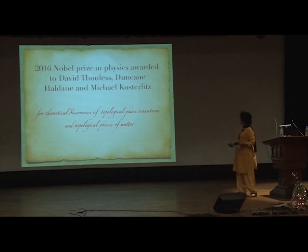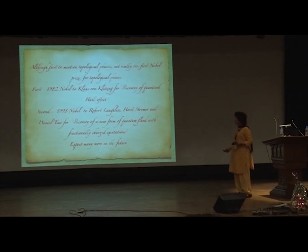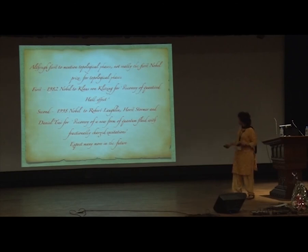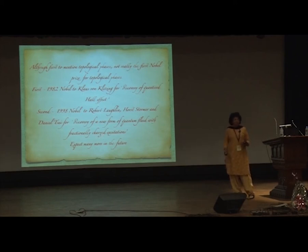The 2016 Nobel Prize in Physics was awarded to Thouless, Haldane, and Kosterlitz for theoretical discoveries of topological phase transitions and topological phases of matter. But I want to emphasize that although it's the first to explicitly mention topological phases, it's not really the first Nobel Prize for topological phases. The first was given in 1982 to von Klitzing for the discovery of the quantized Hall effect — that is the first topological phase. The second was given in 1998 to Laughlin, Störmer, and Tsui for discovery of a new form of quantum fluid with fractionally charged excitations, which was another topological phase. One may expect more Nobel Prizes for other topological phases in the future.